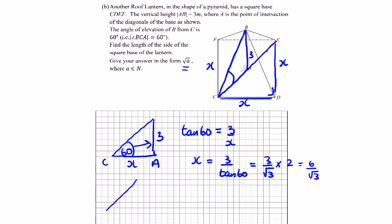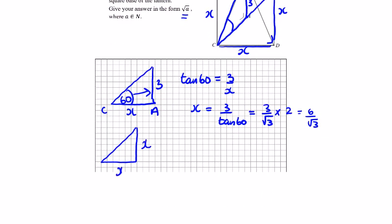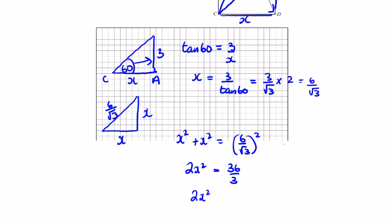Now we have a right angle triangle with x, x, and the diagonal is 6 over root 3. So x squared plus x squared equals 6 over root 3 squared. 2x squared equals 36 over 3, so 2x squared equals 12. x squared equals 6. x equals root 6. And that completes your summer test.